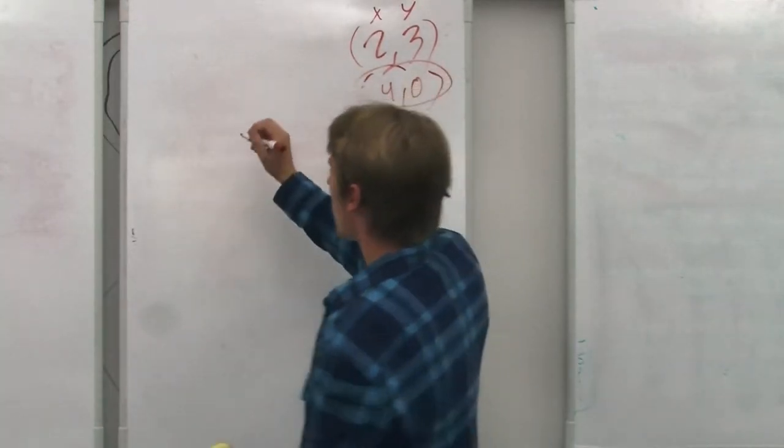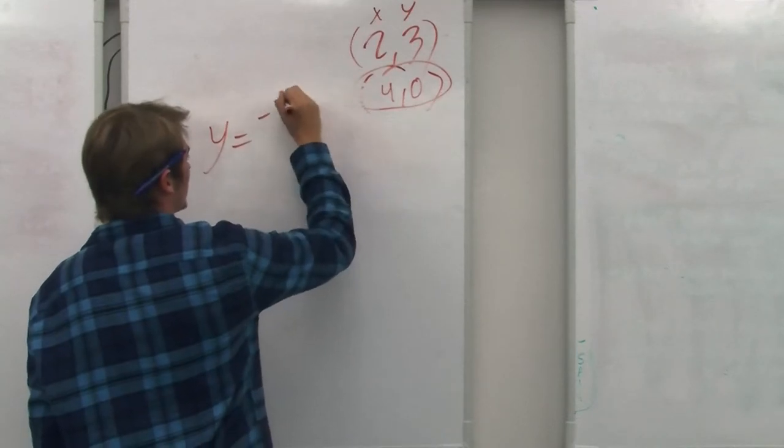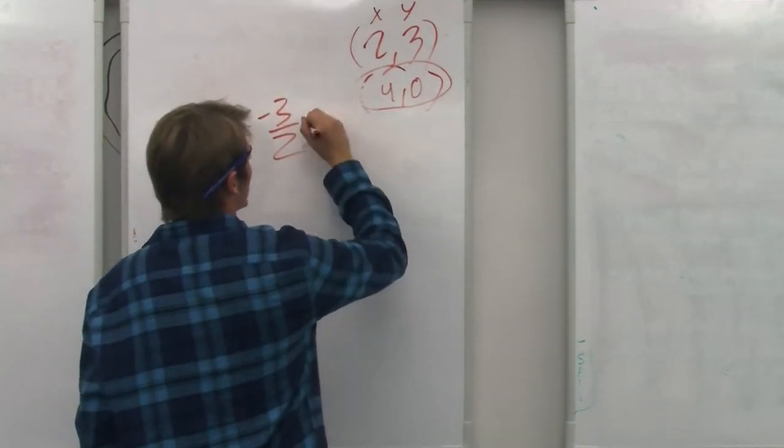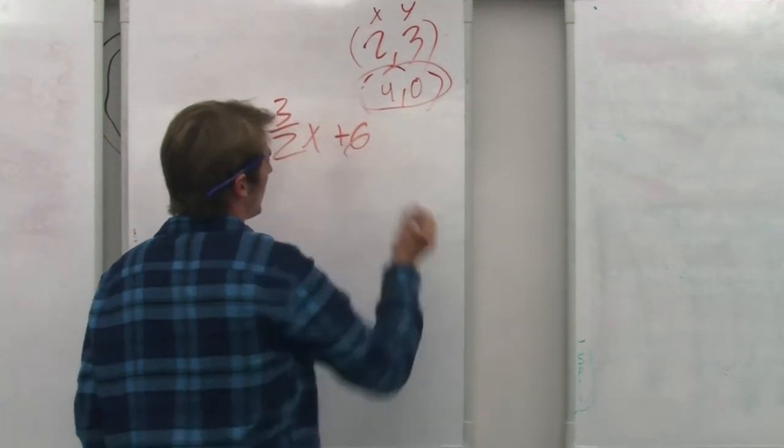Therefore, the line would be y equals negative 3 halves x plus 6. And I've finished my apple. Until then, you're ready for it. Back to the end. Bye.